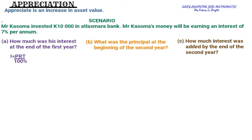We're going to substitute the values. The principal is the amount invested, which was 10,000. The interest rate is seven percent. The question asks for the interest for the first year, so T equals one year.